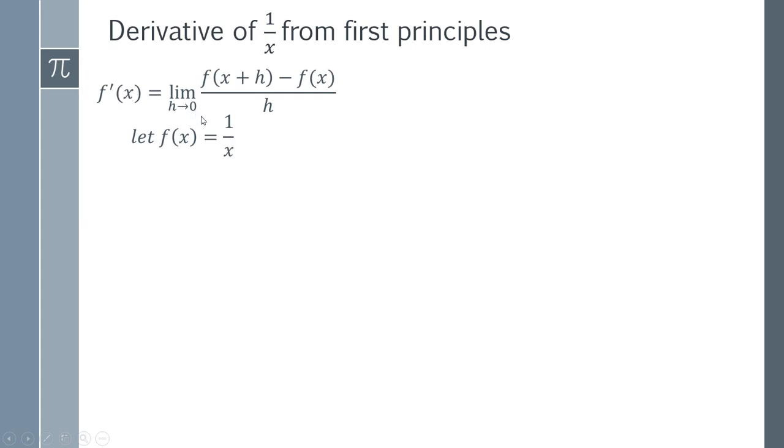We now need to think about finding f of x plus h, so we simply replace this x with x plus h, and this x therefore is going to be replaced with x plus h as well. So we do that there and we've now got everything we need to substitute into this expression. We've got f of x plus h and we've got f of x here.